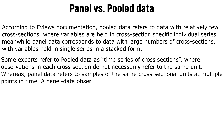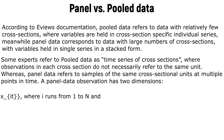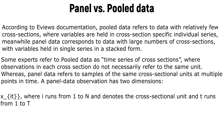A panel data observation has two dimensions: X_{i,t}, where i runs from 1 to N and denotes the cross-sectional unit, and t runs from 1 to T and denotes the time of the observation.